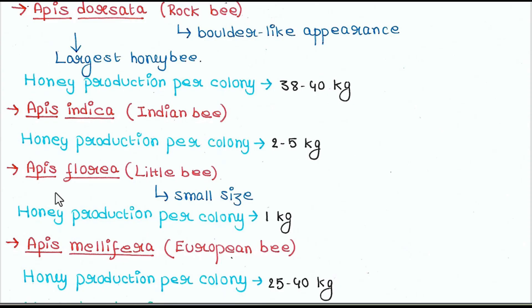Next is Apis florea. They are also known as little bee because of their very small size. The honey production per colony is little — that is 1 kg.